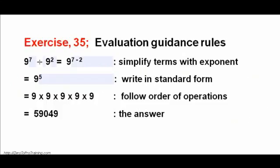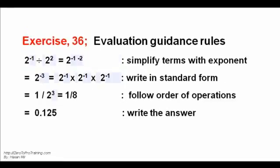Exercise 35. Evaluation Guidance Rules: simplify terms with exponent 0 and 1 first, write in standard form, follow order of operations, write the answer — which is 59049.